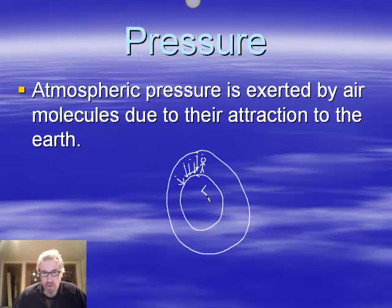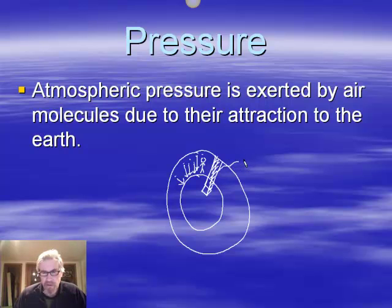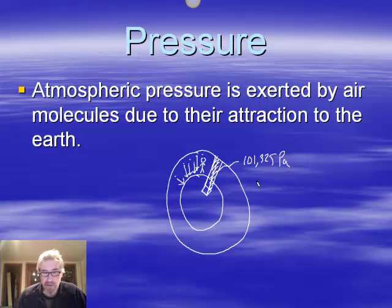The accumulated weight of all that pulled-down air is atmospheric pressure. If we imagine a one-meter square on the surface of the earth and extend that one meter all the way up to the top of the atmosphere, the weight of all of that air in there would amount to a pressure of 101,325 pascals. It seems like a big number — it actually is. It's tons of force over a square meter because the air weighs a lot.